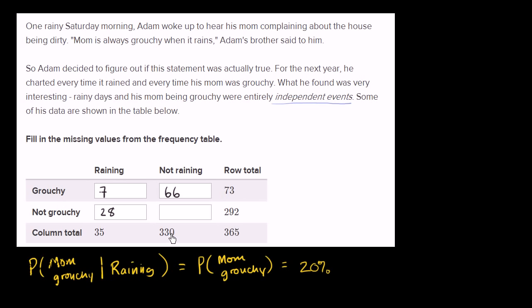And for 330, I guess there's a couple of ways we could do it. We could actually just take 292 minus 28. Let's see, 292 minus 8 would be 284 minus another 20, 264.